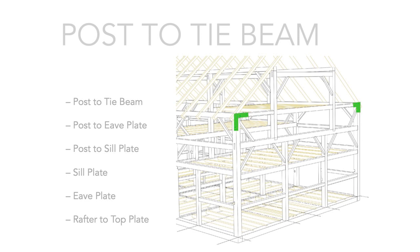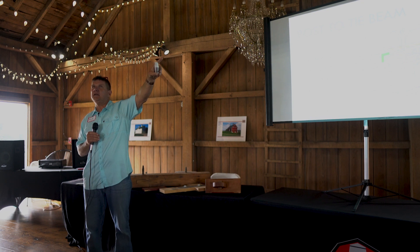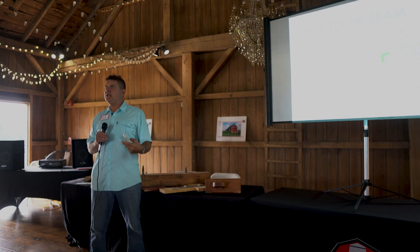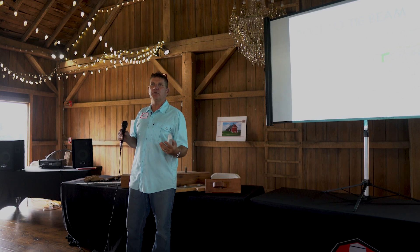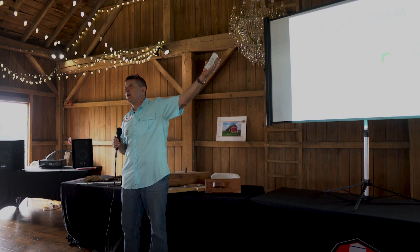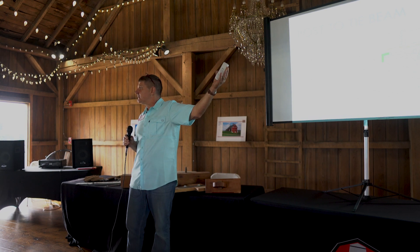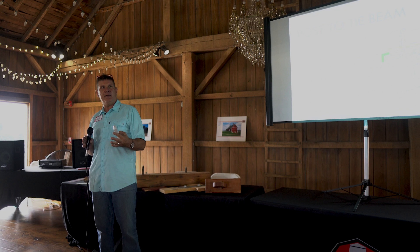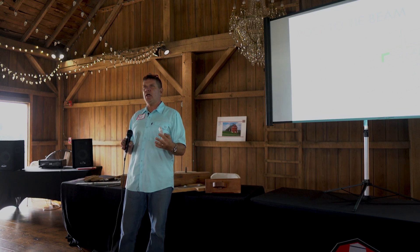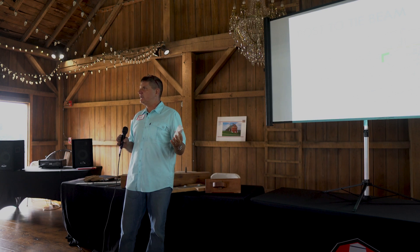We're going to talk about post-to-tie-beam connections. Just in general, a peg is worth about 5,000 pounds. A tapered peg might be worth about 4,000 to 4,500 pounds in tension. What we need to keep a building from blowing over in the wind is about 12,000 pounds of value at that post-to-tie-beam connection. This building has three pegs — you'd think you might get 10, 11, or 12,000 pounds — but if you don't have much relish behind the peg (the rule of thumb is four peg diameters), you don't get the full 5,000-pound value.